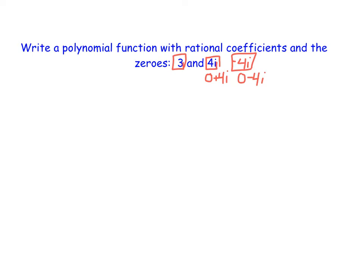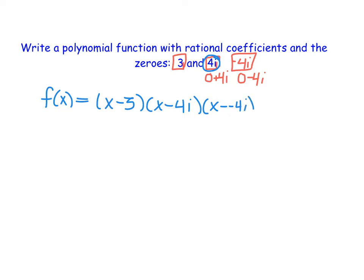Just as we've done before, we write the zero 3 as x minus 3, because it's the opposite. Then replacing with the complex roots, we write x minus 4i, and then x minus a negative 4i, which becomes x plus 4i. We've written this out into factored form, and now we need to rewrite this into standard form to get our original polynomial containing these zeros.